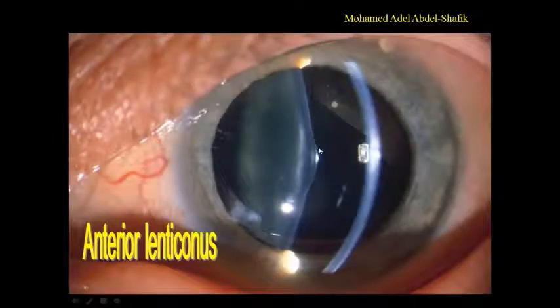Again, another example is anterior lenticonus. The central part of the anterior surface of the lens is cone-shaped.